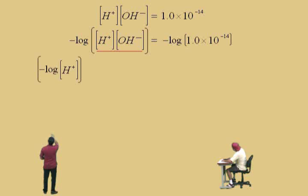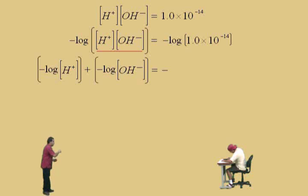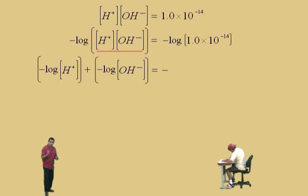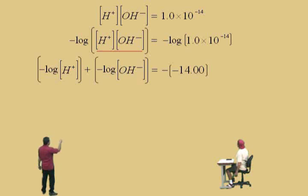So we have the negative log of the hydrogen ion concentration plus the negative log of the hydroxide ion concentration, and that must equal the negative log of 1.0 times 10 to the negative 14th — the ion product constant. Get your calculator out, Charlie, and calculate the log base 10 of 1.0 times 10 to the negative 14th. You get negative 14 — very good. So our right-hand side is the opposite of negative 14, which is positive 14.